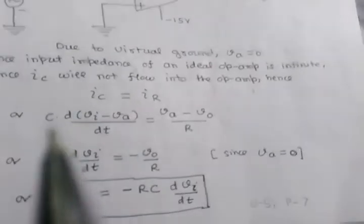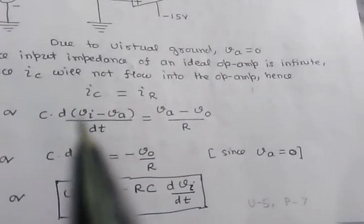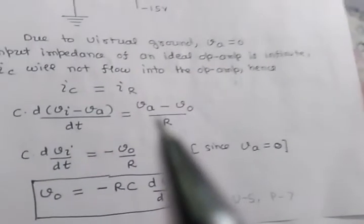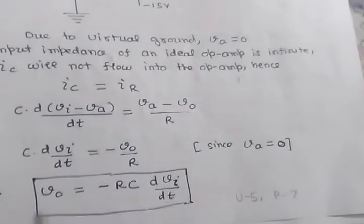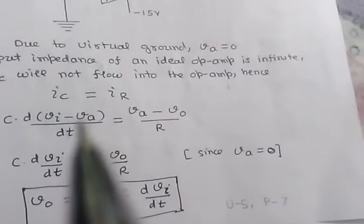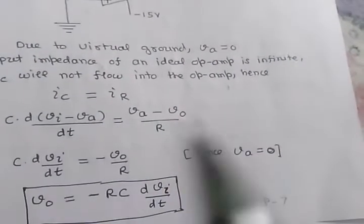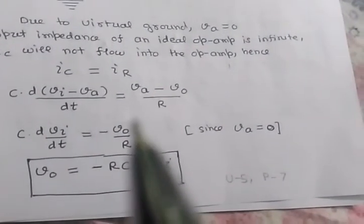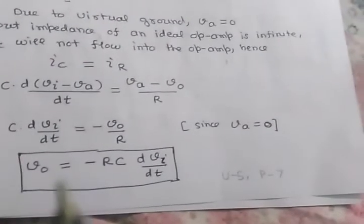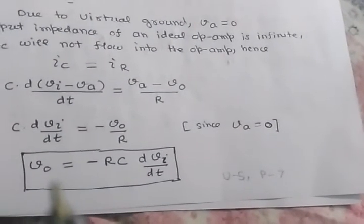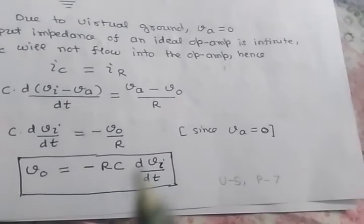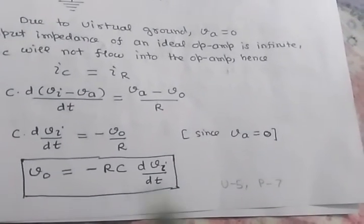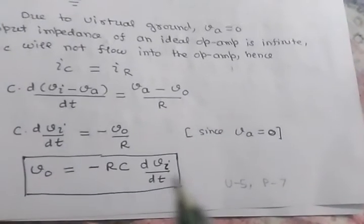IC equals C into dVc/dt, where Vc is d(Vi minus VA)/dt. IR equals VA minus Vo upon R. Substituting VA equal to zero, we get C into dVi/dt equals minus Vo upon R. Therefore, the output voltage of the differentiator is VO equals minus RC into dVi/dt. This is the expression for the output voltage of a differentiator.